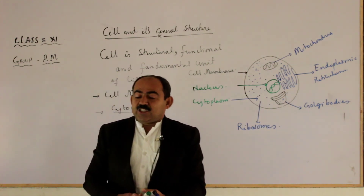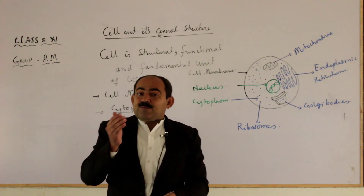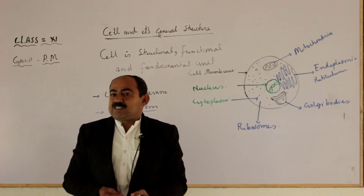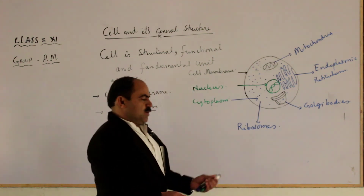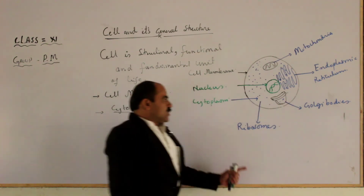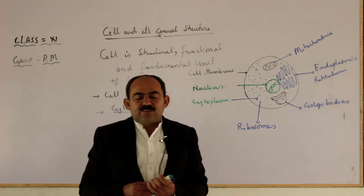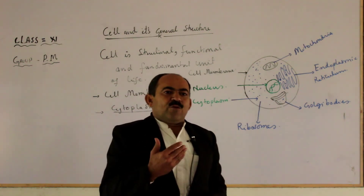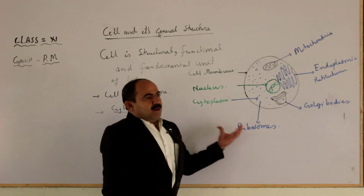Golgi bodies are responsible for the modification and manufacture of different chemical compounds, such as cell wall plate material, and also help in detoxification. Ribosomes are known as the factory of protein because they are responsible for synthesizing protein molecules.